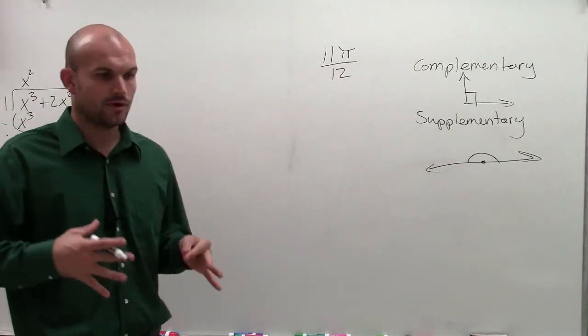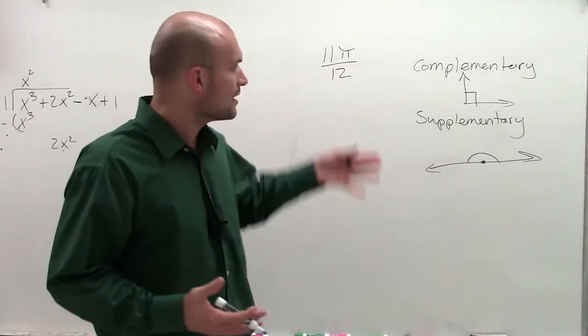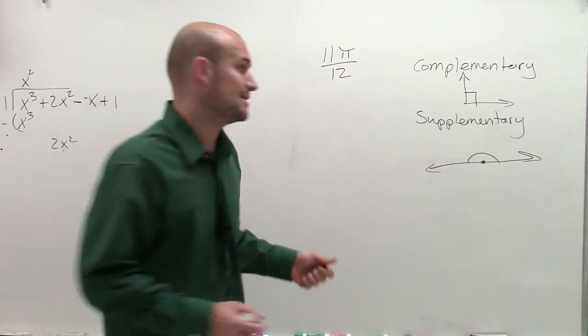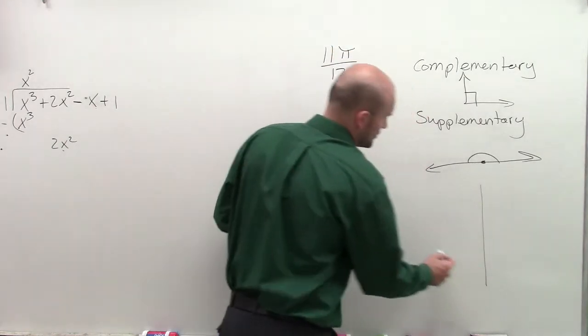Now, what we want to do for trig is now we're going to look at, well, what is the equivalent to 90 degrees and to 180 degrees in trigonometry? Well, let's look at our unit circle.